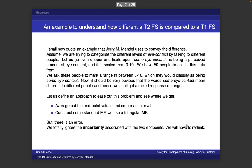Moving on, we'll now try to understand type 2 fuzzy sets. We saw a type 1 fuzzy set. How different is a type 2 fuzzy set? We know that it encompasses more uncertainty and gives us more information than a type 1 fuzzy set. For this, we'll use an example that Jerry Mendel gave in his paper.